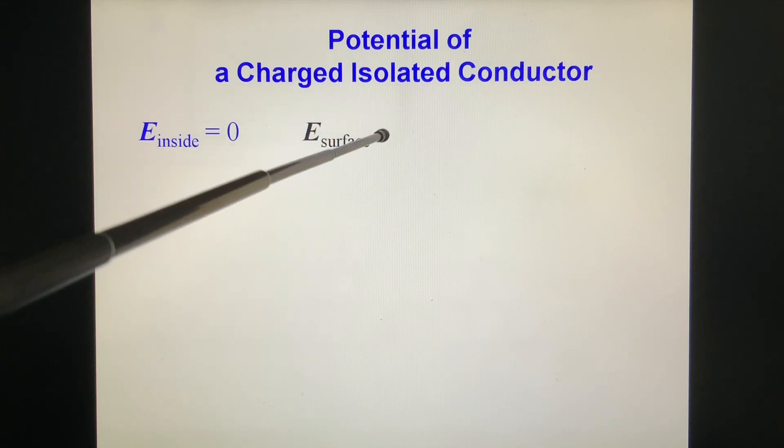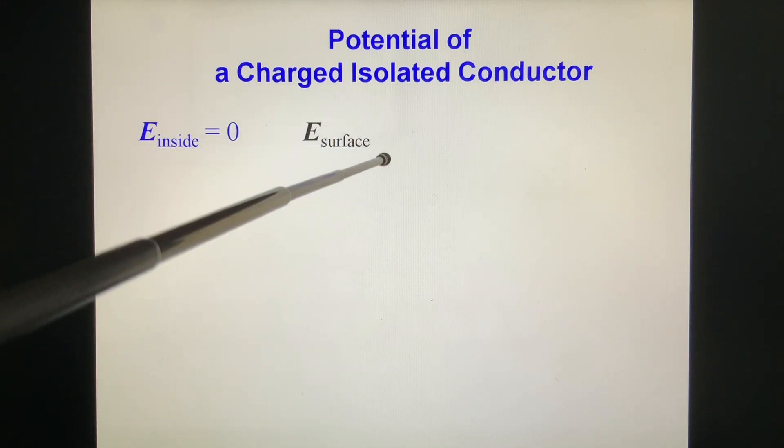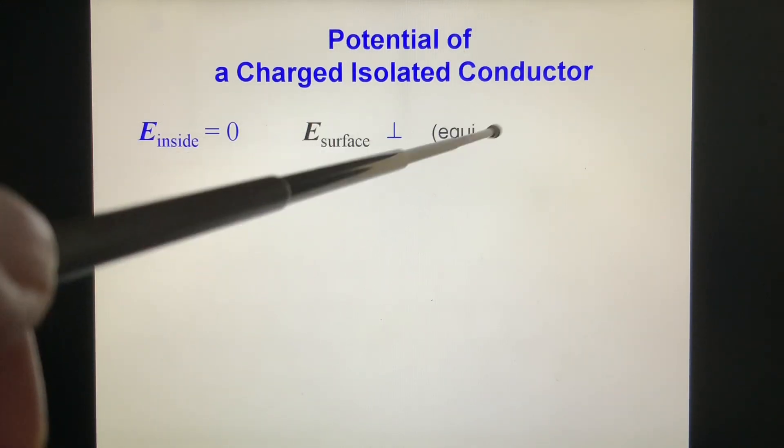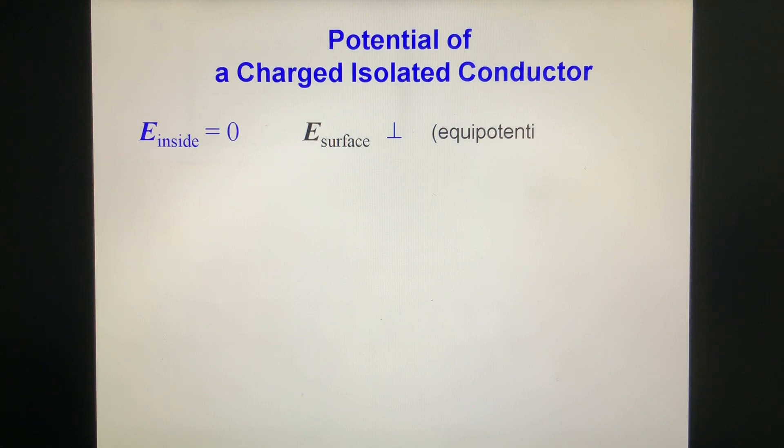And E surface is perpendicular to the equipotential surface of the body conductor. So it is perpendicular to the surface, equipotential surface.